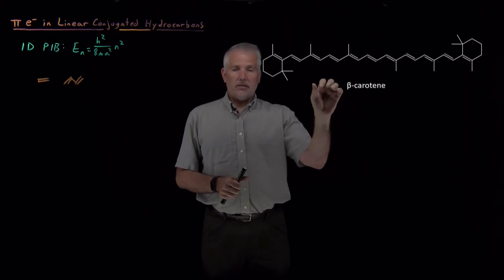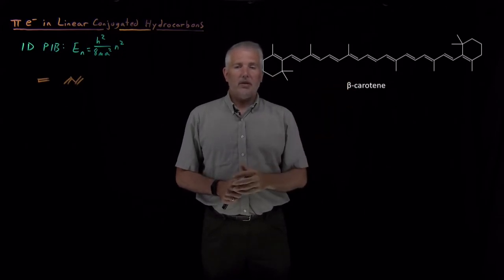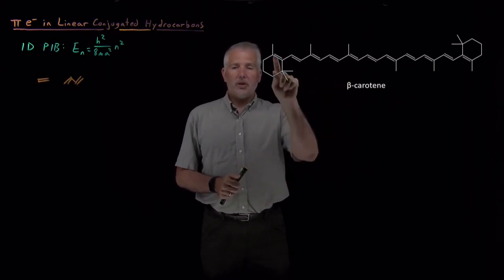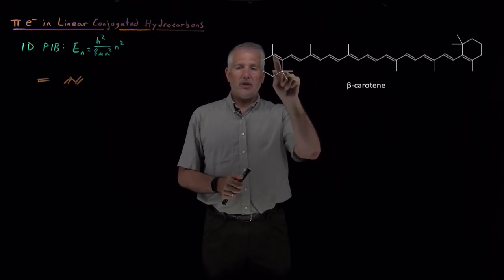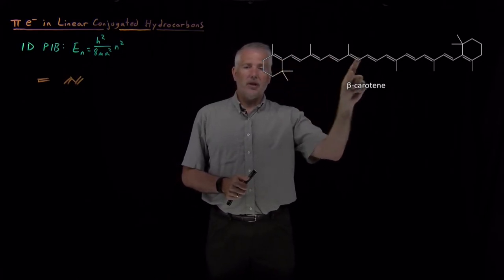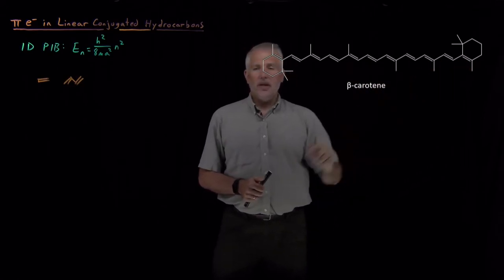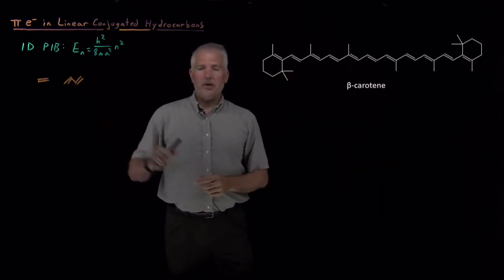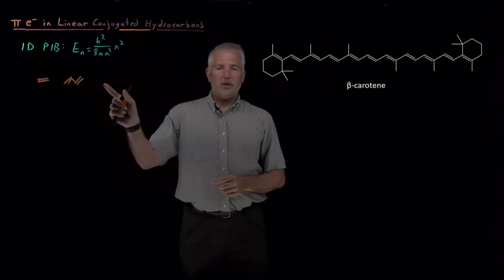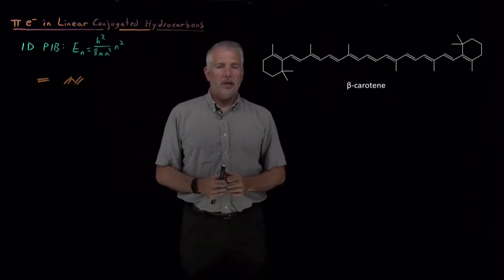At least in large quantities, it looks reddish-orange. So the structure here, notice, is conjugated. I've got double bonds alternating with single, double, single, double, single, throughout the whole backbone of this molecule. And it's a much longer backbone than the shorter molecules like hexatriene or octatetrine that we have considered previously.